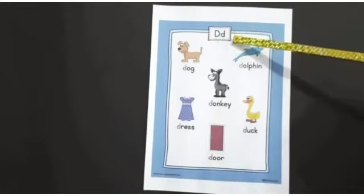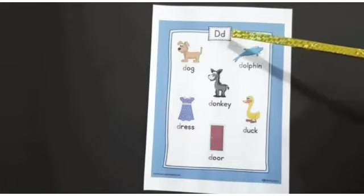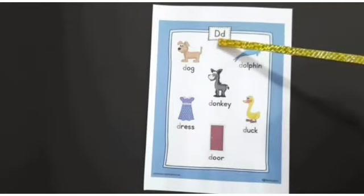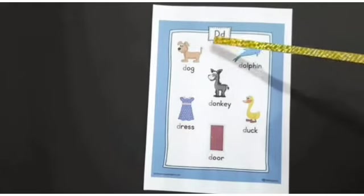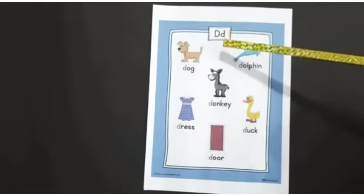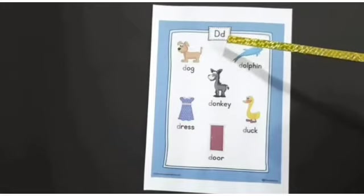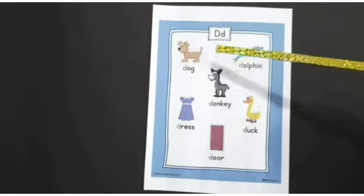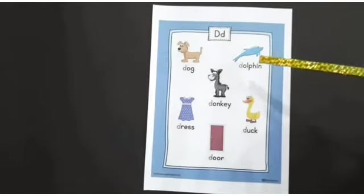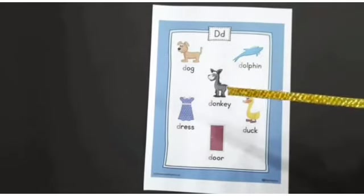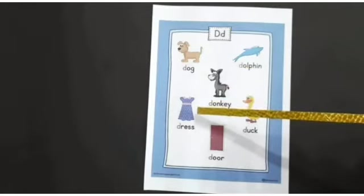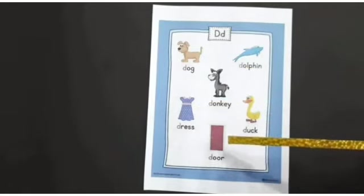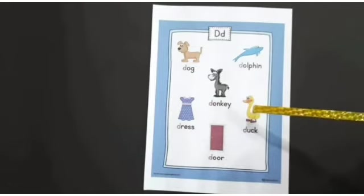Alphabet D. Capital D, small d. D says D. D for dog, D for dolphin, D for donkey, D for dress, D for door, D for duck.